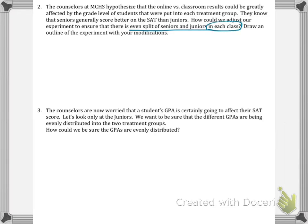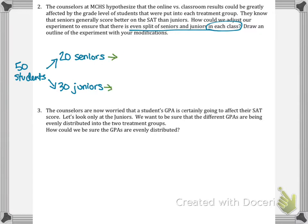So how could we adjust our experiment to ensure there's an even split of seniors and juniors in each class? We're going to outline this experiment with modifications from our previous design. We'll take our 50 students and start by breaking them into juniors and seniors — 20 seniors and 30 juniors are taking the SAT prep course. Then we do our random assignment.